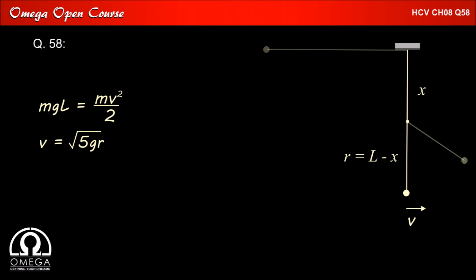Also we know that the minimum speed at the lowest position required to complete the vertical circle is root 5gr. Therefore mg L is equal to m times 5gr by 2. Since radius r is equal to L minus x therefore L is equal to 5 times L minus x by 2.